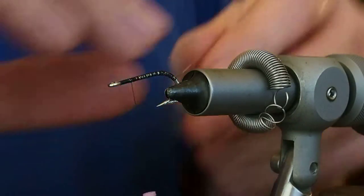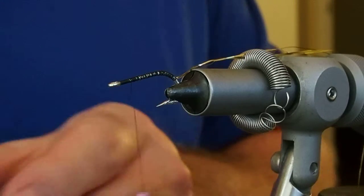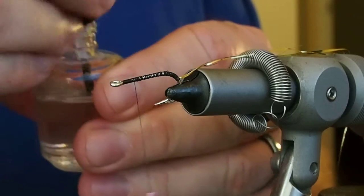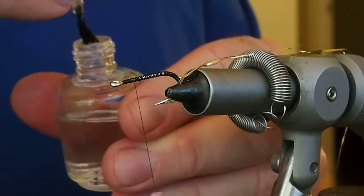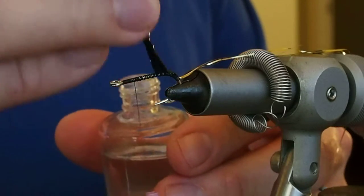Actually, before I start my wraps, I'm just going to hit the shank and thread with a little bit of Sally Hansen's here, just to help strengthen the fly.